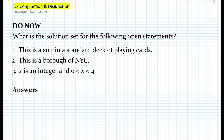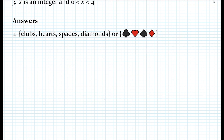For each of these answers, we want to represent the solution set as brackets. For example, for number one, we have clubs, hearts, spades, and diamonds. Or you can use the symbols for clubs, hearts, spades, and diamonds as shown.